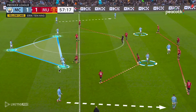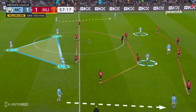Manchester City throughout the match went with a 3-2 base with two attacking midfielders and Erling Haaland as their focal point up top. What was interesting about the 3-2 base is the wide center-backs connected mostly towards the wingers playing on the outside shoulders of the wide midfielders of Manchester United in their 4-4-2.